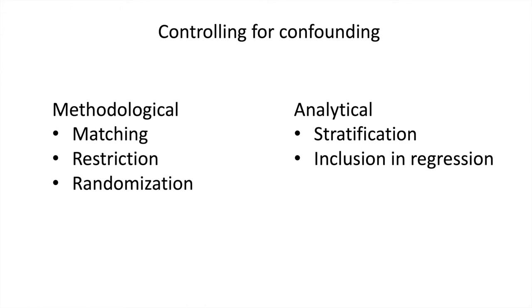The main methodological ones are matching, restriction, and randomization. As far as analytical ways of controlling, there's stratification, which I'll just briefly touch on, and inclusion in the regression, which I will spend a little more time on.